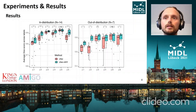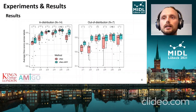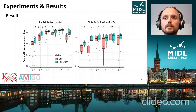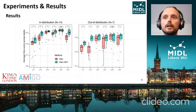On the left, you can see the results for in-distribution data, where the MRF U-Net in blue consistently outperforms the vanilla U-Net model in red. On the right, we see similar results for the out-of-distribution data. Additionally, the MRF U-Net requires fewer parameters than the U-Net for some model configurations to achieve the same or better Dice scores.